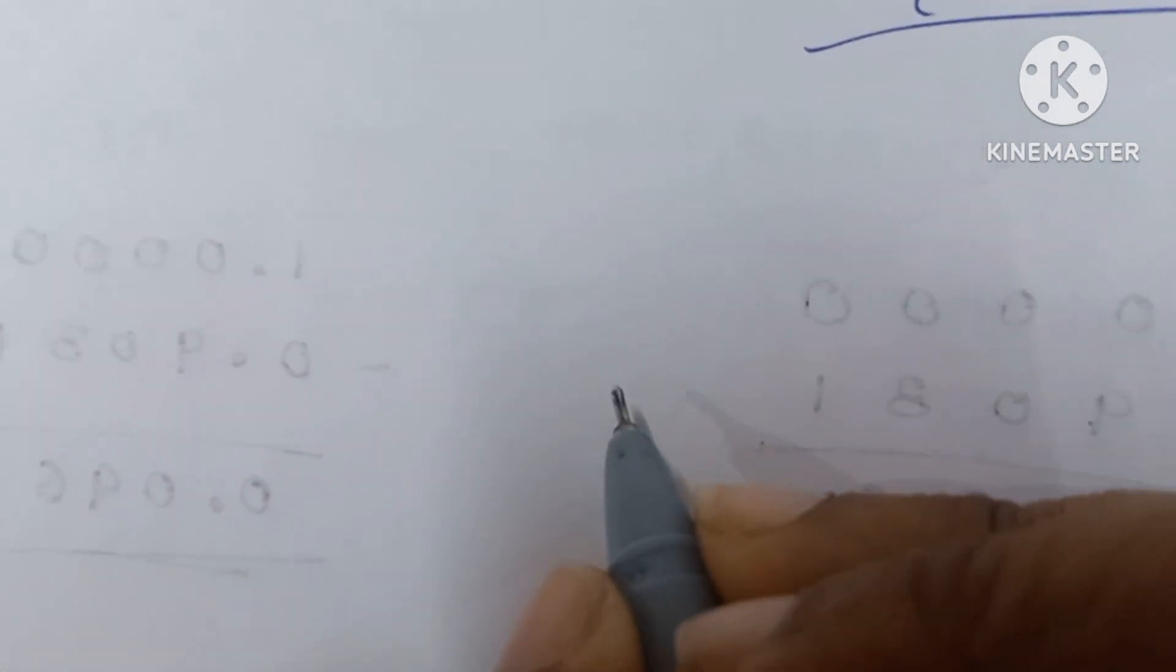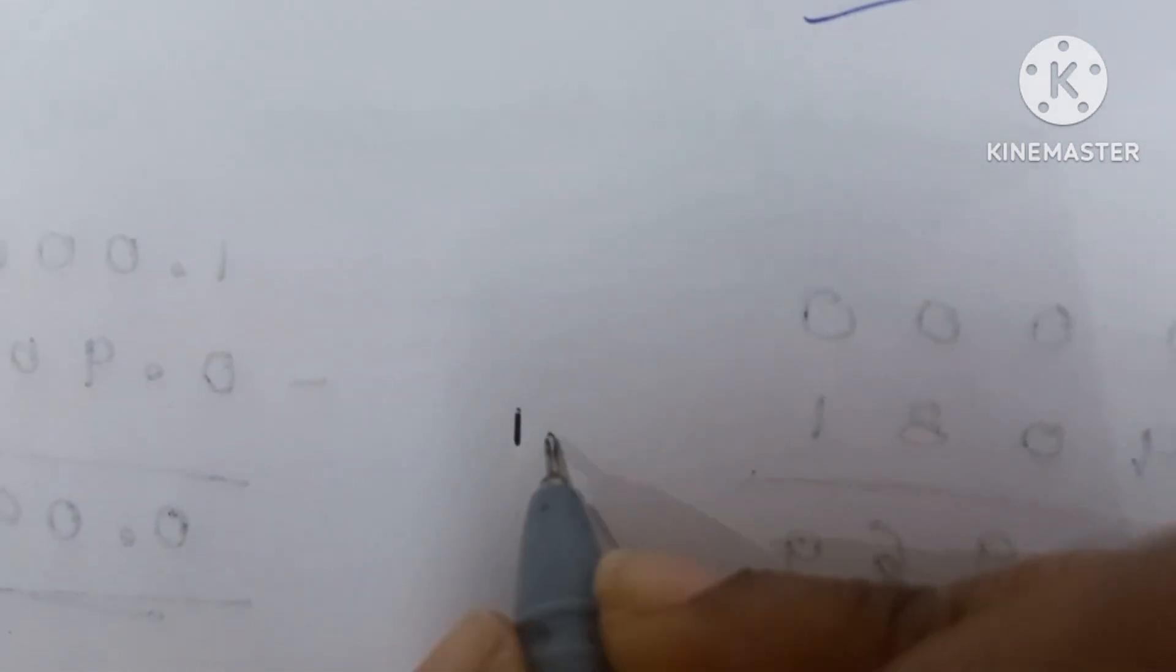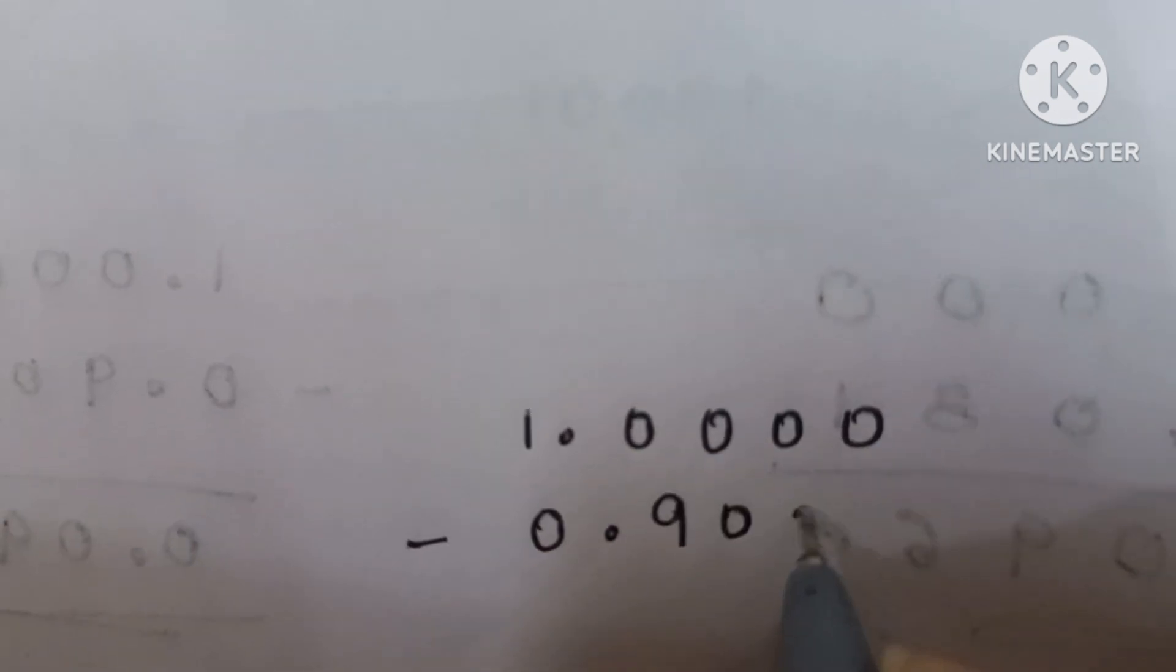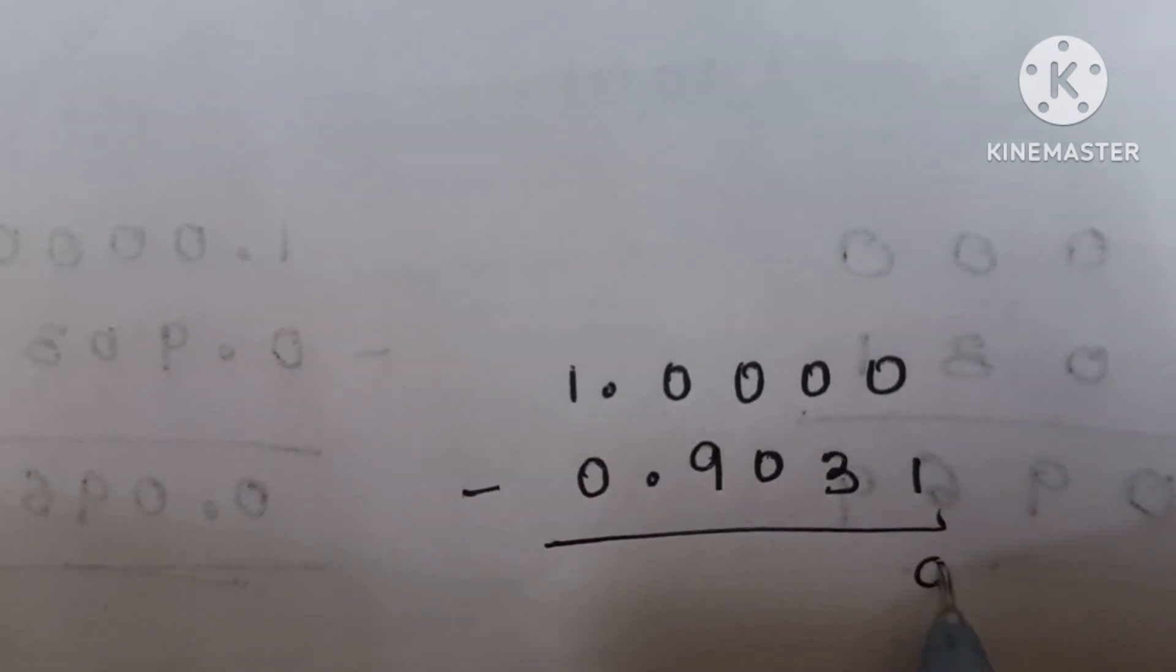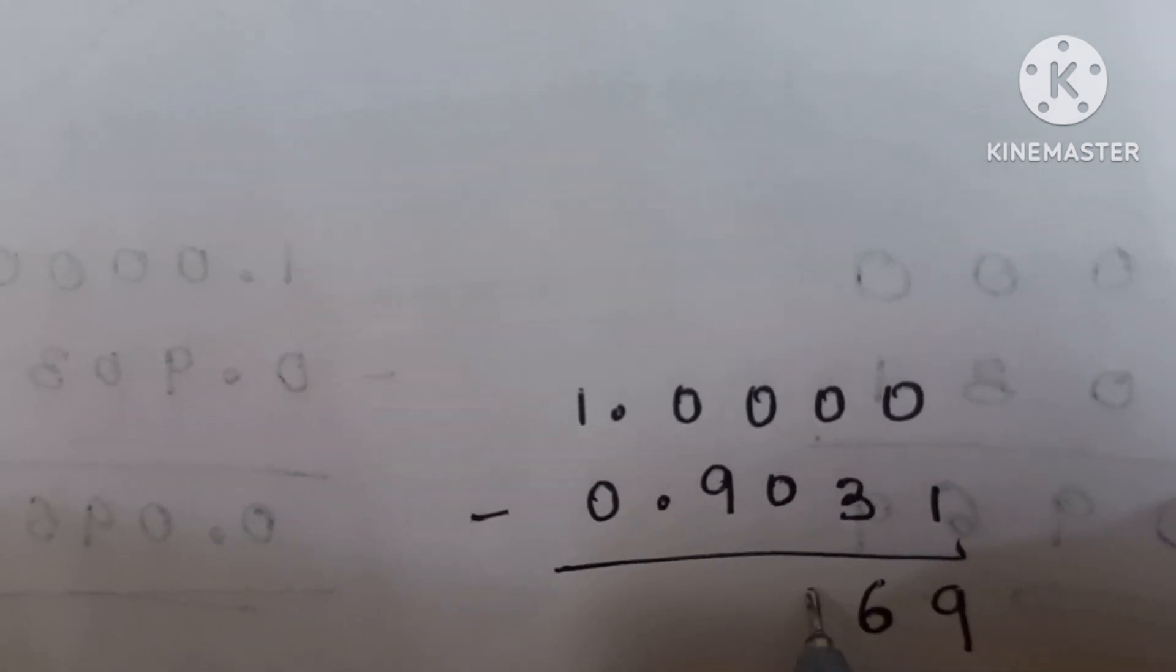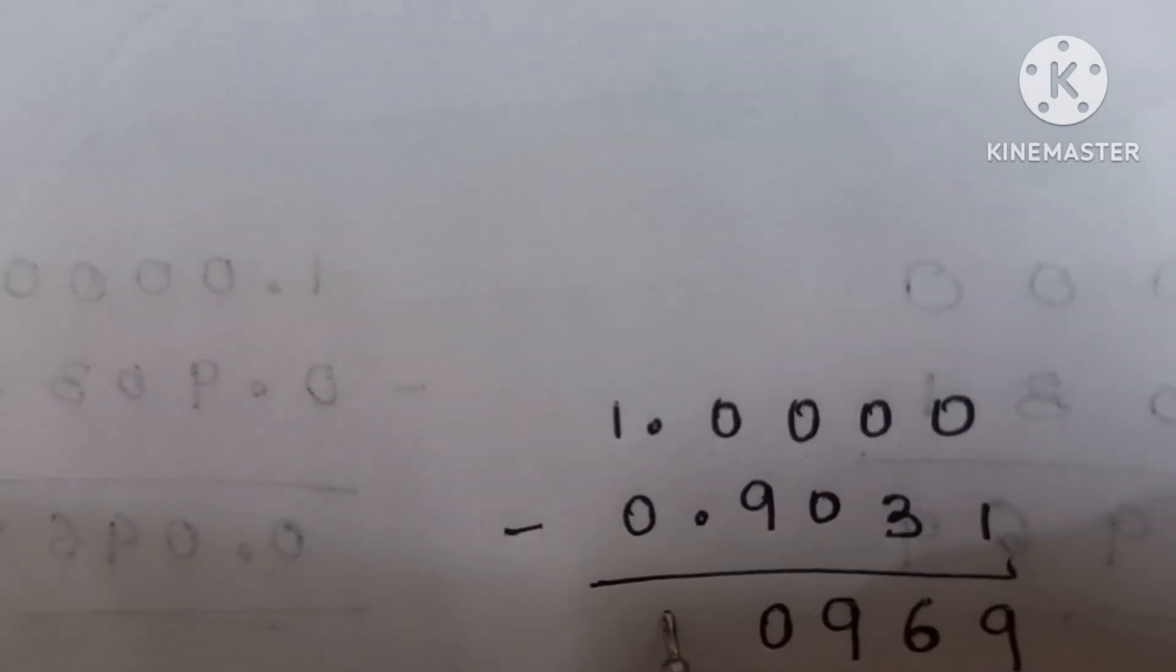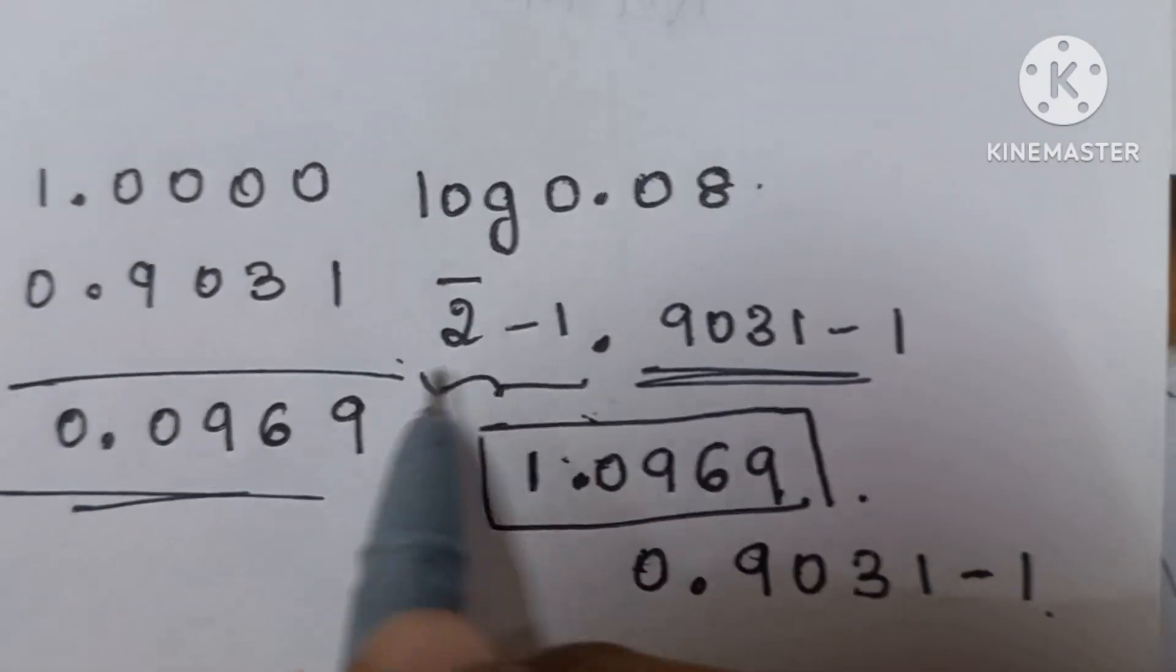We will do the subtraction here. That is, we are subtracting this with 1. So it is 1.0000 minus 0.9031. We will subtract and get 0.0969. This is our value.